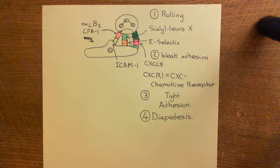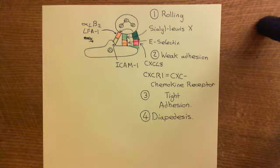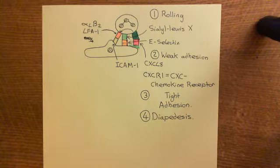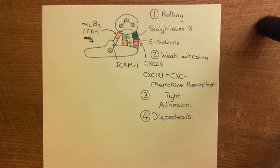Welcome to this next video in which we're discussing leukocyte extravasation. We're in the process of discussing type 2 activation and the recruitment of monocytes by type 2 activated endothelial cells. We've seen how type 2 activated endothelial cells can start to increase their extravasation of neutrophils from the type 1 activated endothelial cells.